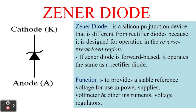What's the function of a Zener diode? It provides a stable reference voltage for use in power supplies, voltmeters and other instruments. In other words, it will serve as a voltage regulator.